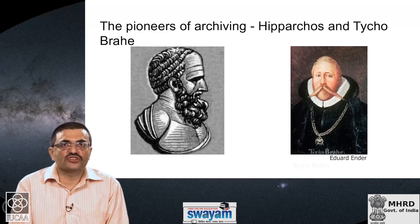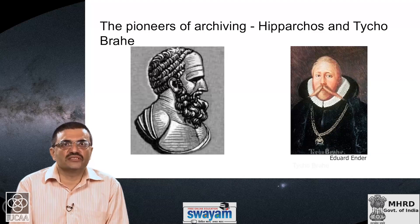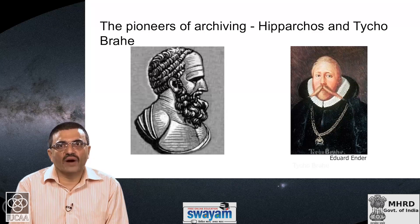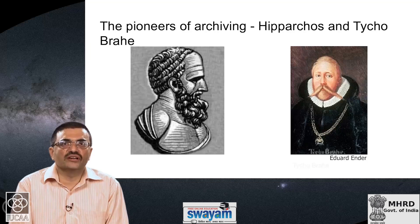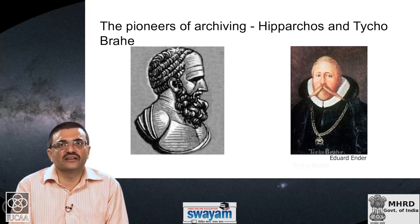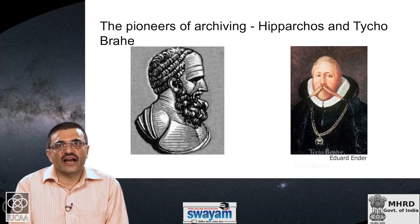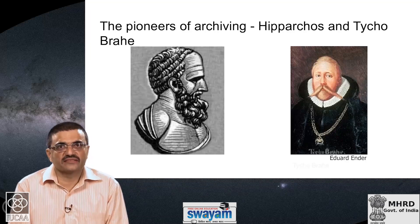When we say astronomical archive, we take a very simple definition: any kind of organized, systematized information about the sky above us. The earliest archives at the time of Hipparchos were very tiny — the catalogue of stars he created could probably have been noted down in a few pages of text. Today's archives are many terabytes and sometimes even petabytes in size, and they have grown enormously over the last 2000 years.